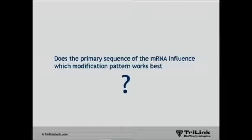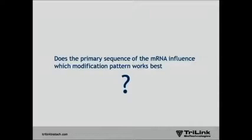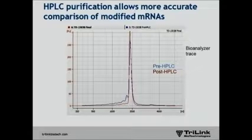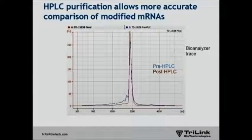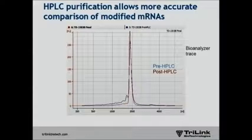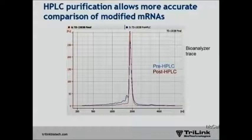The next question was whether the primary sequence of the mRNA influenced which modification pattern worked best — that's why we made both the GFP and luciferase series. We performed transfections with the luciferase RNAs in the same cell lines. The rank order was largely the same, but in some cases it was different. As we dug deeper, we realized that the quality of the transcriptions was variable with different modifications. Here's a bioanalyzer trace of a luciferase mRNA — there are failure sequences at the beginning where the polymerase prematurely terminates and some higher molecular weight material at the back end. After HPLC purification, you get a cleaner peak.